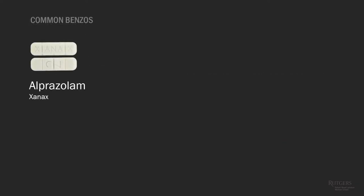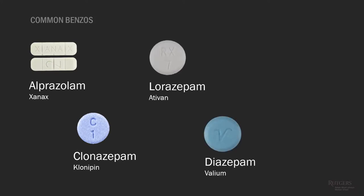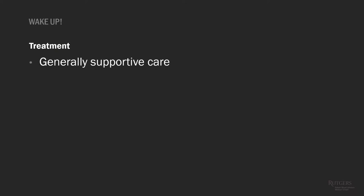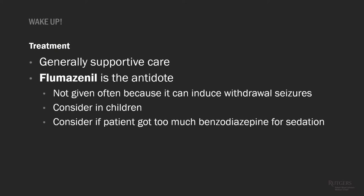Common benzodiazepines include alprazolam (Xanax), clonazepam (Klonopin), lorazepam (Ativan), diazepam (Valium), and midazolam (Versed). Treatment is generally supportive. There is an antidote called flumazenil — a competitive antagonist at the GABA-A receptor, specifically at the benzodiazepine binding site. It's often not given due to concern about inducing withdrawal seizures, especially in chronically benzodiazepine-dependent patients. However, you may want to consider it in children or in iatrogenic over-sedation situations.